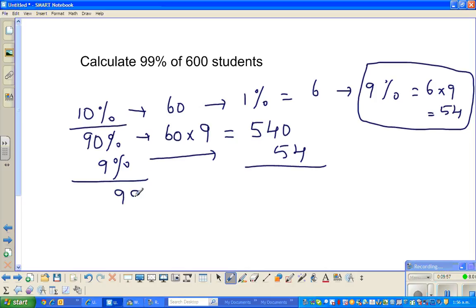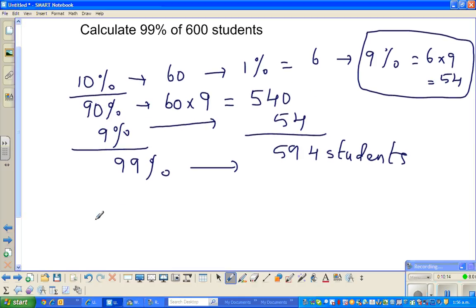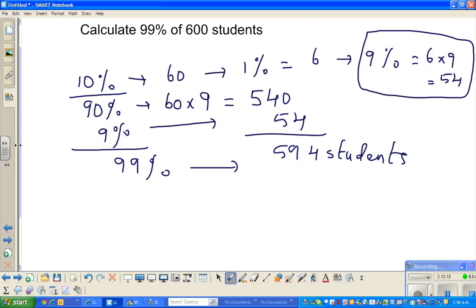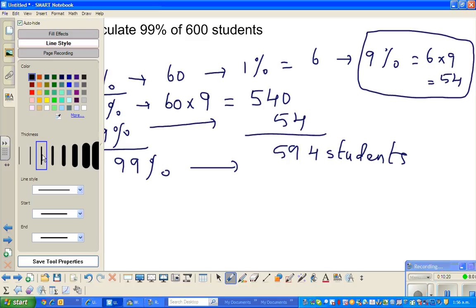So adding these two, 99% would be 540 plus 54, which is 594 students. A more efficient way to get 99% is to go from 100%.